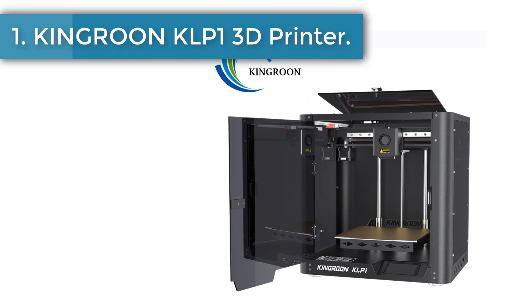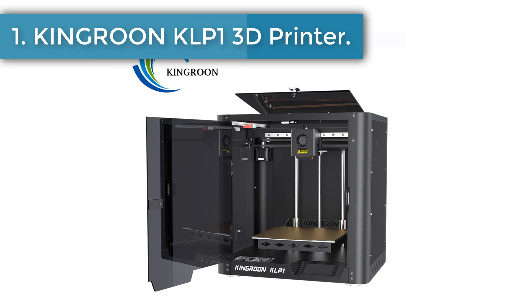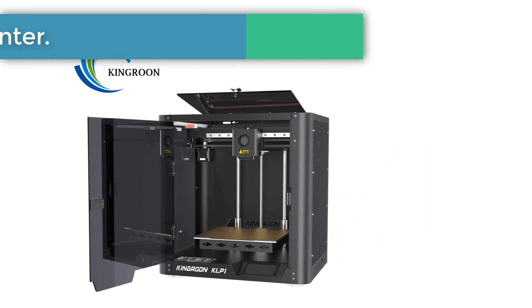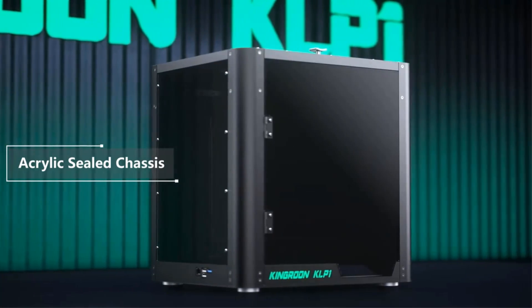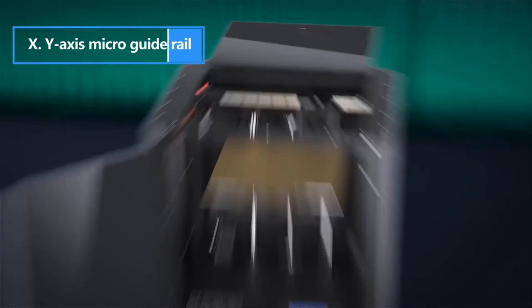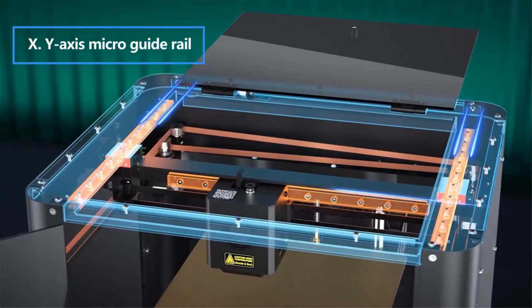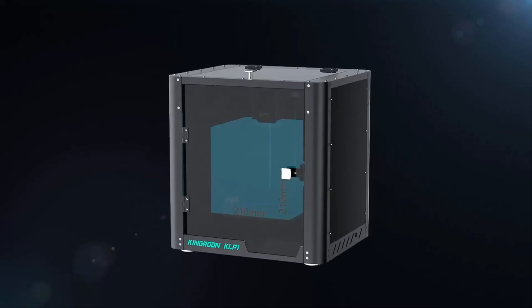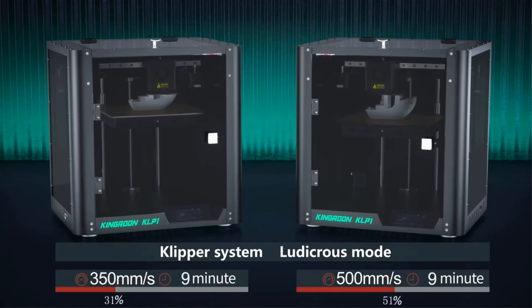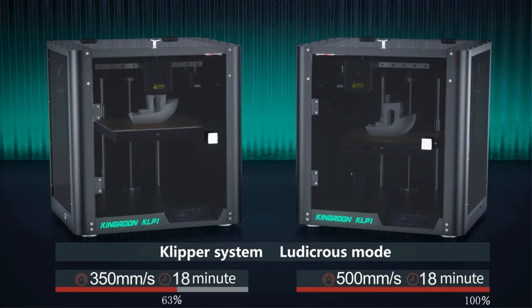Number 1. Kingroon KLP-1 3D Printer. Kingroon KLP-1 is a fast print speed CoreXY 3D printer with Clipper firmware and a protective enclosure. With Clipper firmware features, Kingroon KLP-1 lets people print at high speed and with great quality. Kingroon KLP-1 has a powerful main board with Clipper firmware installed. No Raspberry Pi is required.